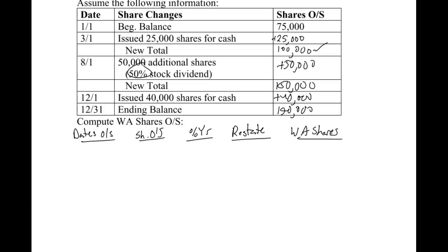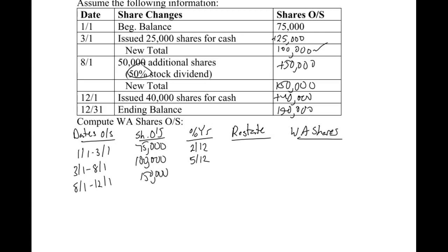Let's fill in the table without worrying about the restate column yet. Our beginning balance was 75,000 shares — no transactions until March, so that's 2/12 of the year. From 3/1 to 8/1 we had 100,000 shares outstanding, which is 5/12 of the year. From 8/1 to 12/1 we had 150,000 shares outstanding — that's 4/12 of the year. From 12/1 to 12/31 we're up to 190,000 shares, which is 1/12. As always, do a quick check to make sure you're accounting for 12/12 of the year.